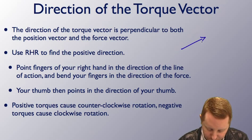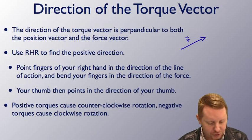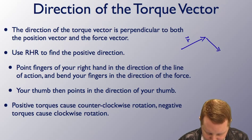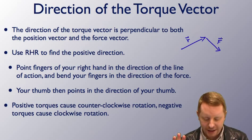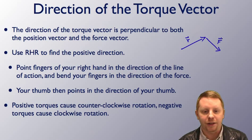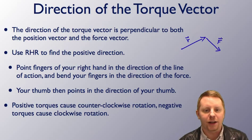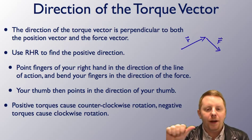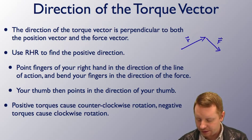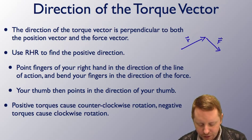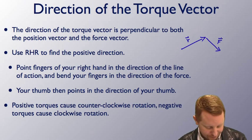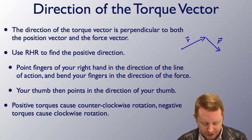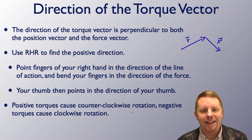For example, if we have an R vector in this direction and a force vector in this direction, we're going to use our right hand rule. Take the fingers of your right hand, point them in the direction of the R vector, and then bend them in the direction of the force vector. Your thumb will point in the direction of the torque vector. Positive torques cause counterclockwise rotation, and negative torques cause clockwise rotations.